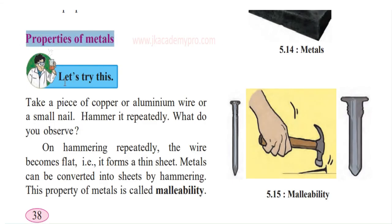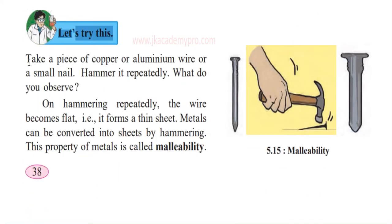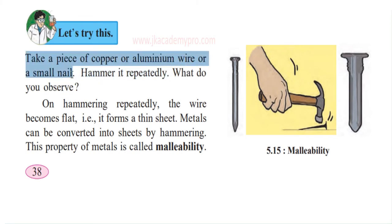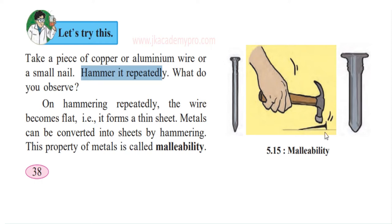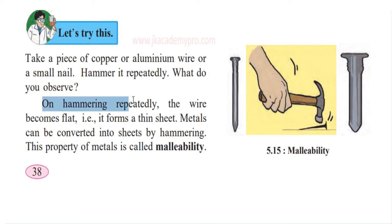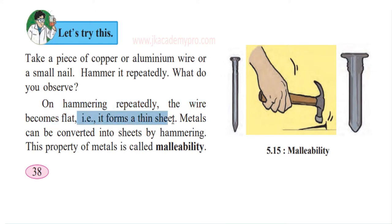Properties of metals. Let us try this. Take a piece of copper or aluminum wire, or a small nail — a nail is made of iron. Hammer it repeatedly. Take a piece of nail, or a piece of copper or aluminum wire, and start hammering it. Now what do you observe? What happened? The nail started flattening out — on hammering repeatedly, the wire or nail becomes flat.